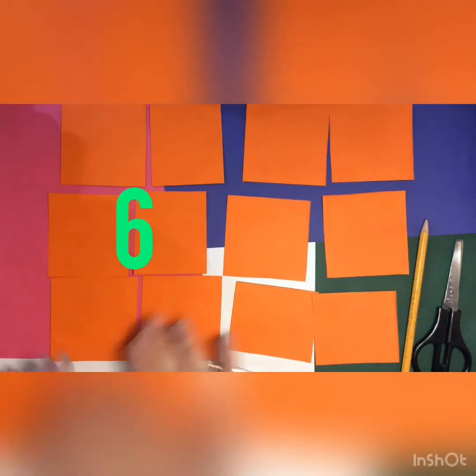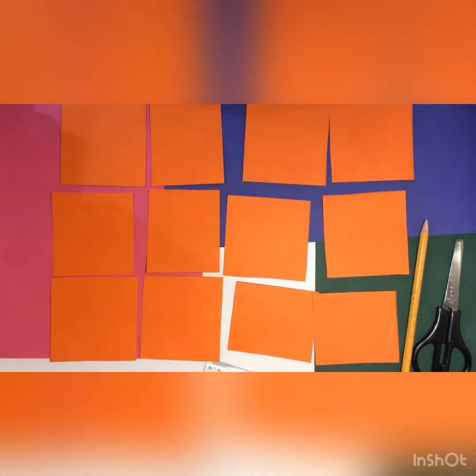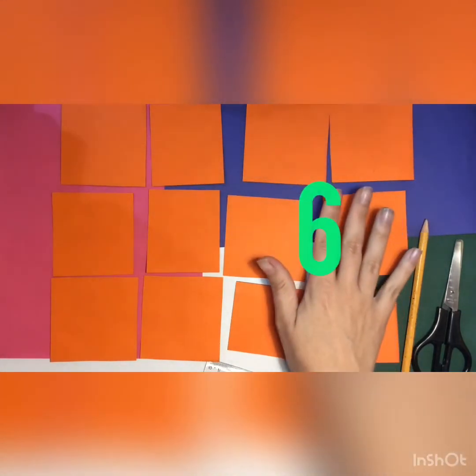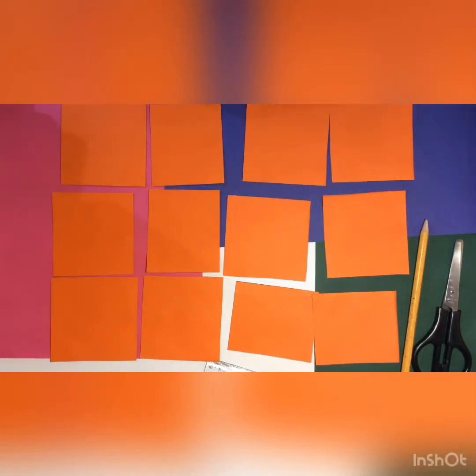Now, on six pieces we are going to write the name of the insect and on the other six pieces we are going to draw the insect. So I'm going to do it and then I'm going to show it to you.